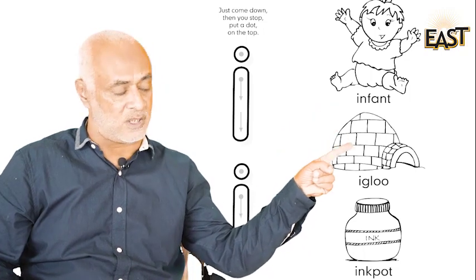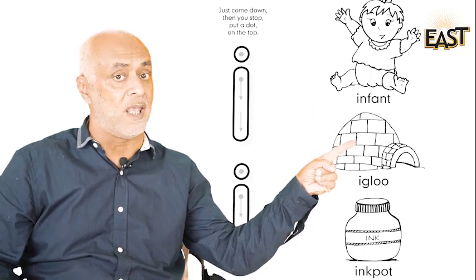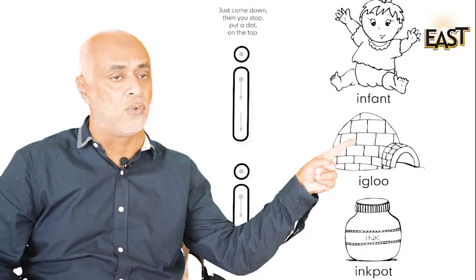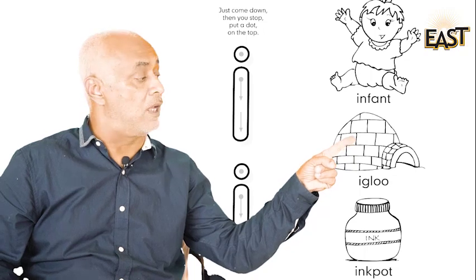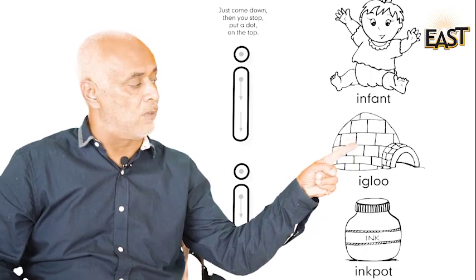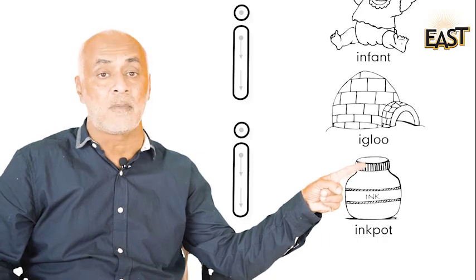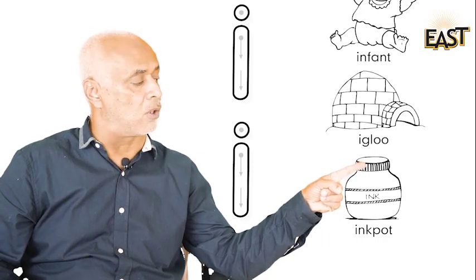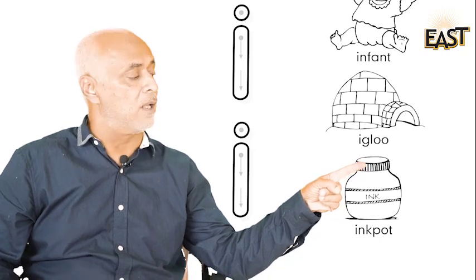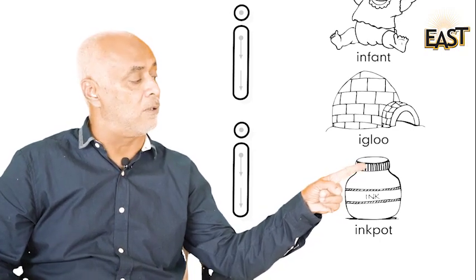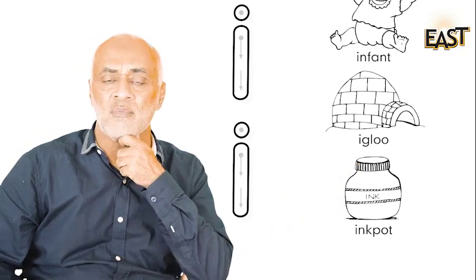And what is this? Igloo, igloo, igloo. Let's say together: igloo, igloo. And what is this here? Ink pot, ink pot, ink pot. Let's say together: ink pot, ink pot.